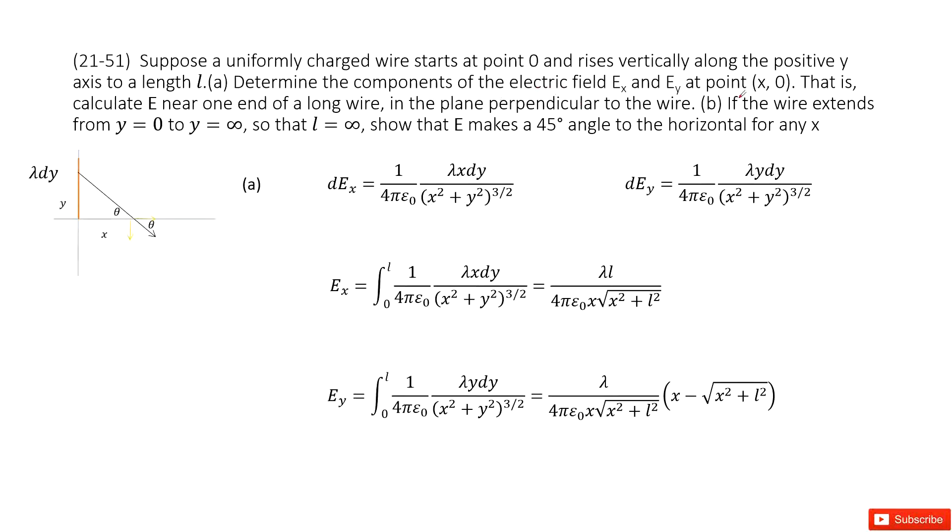The second one tells you if this wire extends from 0 to infinity, so y from 0 to infinity, that means L equals infinity. And we need to find where E makes a 45 degree angle to the horizontal for any x.